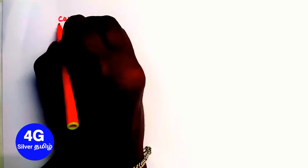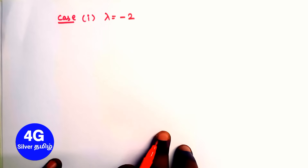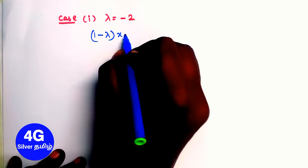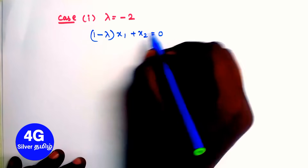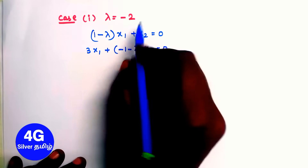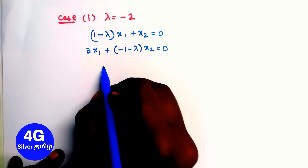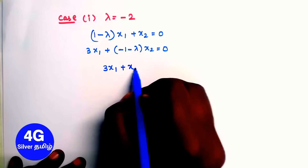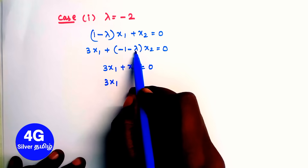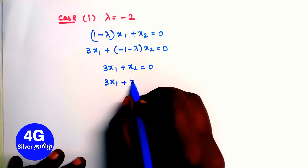Case 1: lambda equals minus 2. Substituting lambda equals -2 into equation 1: (1 minus (-2)) x1 plus x2 equals 0, giving 3x1 plus x2 equals 0. Substituting into equation 2: 3x1 plus (-1 minus (-2)) x2 equals 0, giving 3x1 plus x2 equals 0.